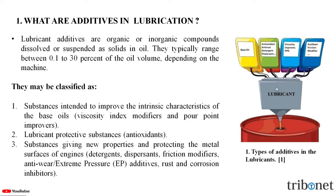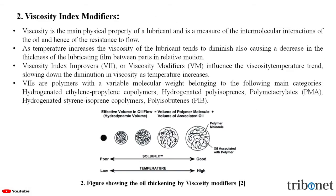Let us discuss each of these additives used in lubricants one by one. The first one is viscosity modifiers. Viscosity is the main physical property of a lubricant and is a measure of the intermolecular interactions of the oil and hence of the resistance to flow. As the temperature increases, the viscosity of the lubricant tends to diminish, causing a decrease in the thickness of the lubricating film between parts in relative motion. Viscosity index improvers or viscosity modifiers influence the viscosity-temperature trend, slowing down the diminution in viscosity as temperature increases. Viscosity index improvers are polymers with a variable molecular weight belonging to the following main categories.